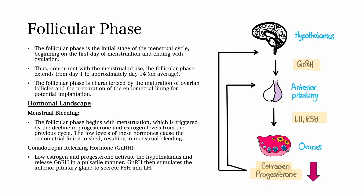Low estrogen and progesterone activates the hypothalamus, which releases gonadotropin-releasing hormone in a pulsatile manner. Gonadotropin-releasing hormone then stimulates the anterior pituitary gland to secrete FSH and LH.